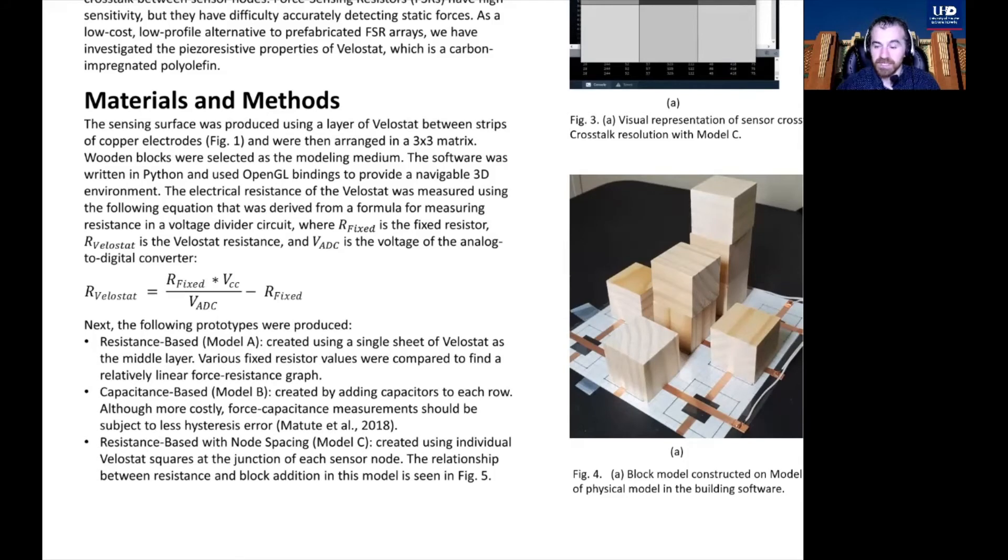Because the analog readings by the microcontroller yield arbitrary values, I used the formula for voltage drop across a voltage divider circuit to derive the following equation, which yields the electrical resistance of the Velastat in ohms. The Velastat resistance for three fixed resistor values can be seen in figure 5.